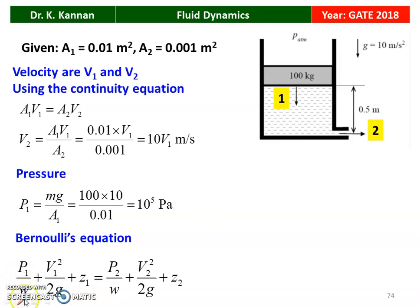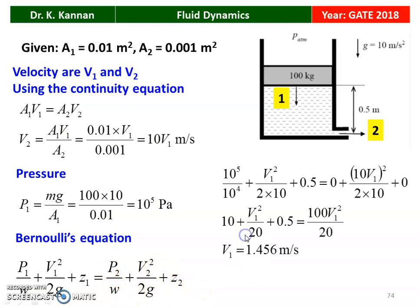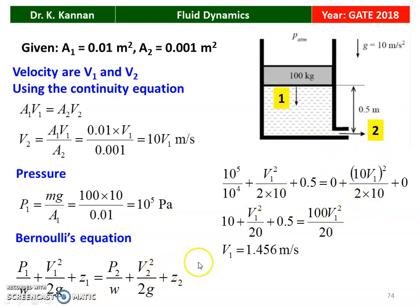Using Bernoulli's equation: P₁/(ρg) + V₁²/(2g) + Z₁ = P₂/(ρg) + V₂²/(2g) + Z₂. With P₁ = 10⁵ Pa, ρg = 10⁴, Z₁ = 0.5 m, P₂ = 0 (atmospheric), V₂ = 10V₁, Z₂ = 0 (datum): 10 + V₁²/20 + 0.5 = (10V₁)²/20. Rearranging and solving gives V₁ = 1.456 meters per second.